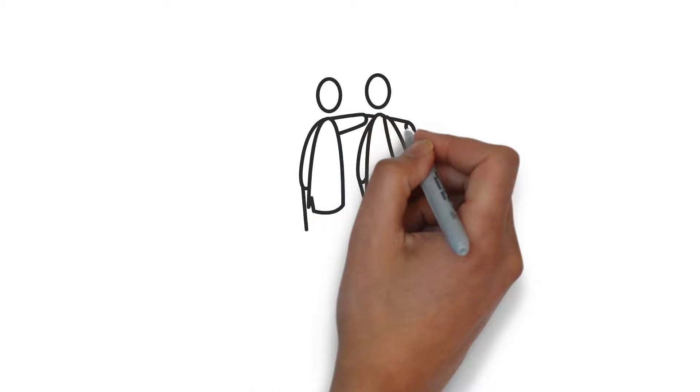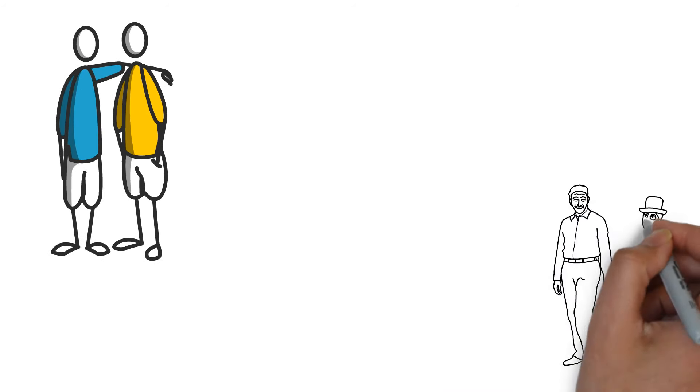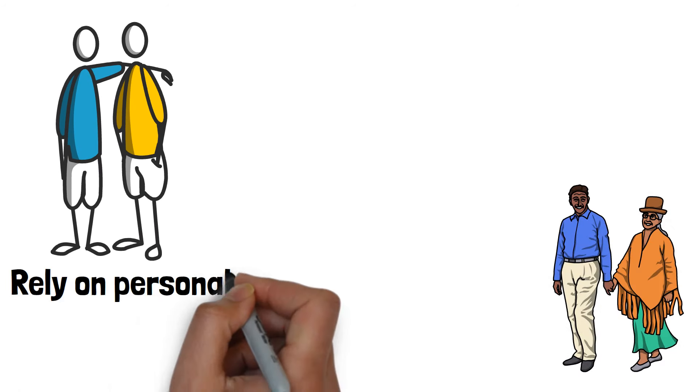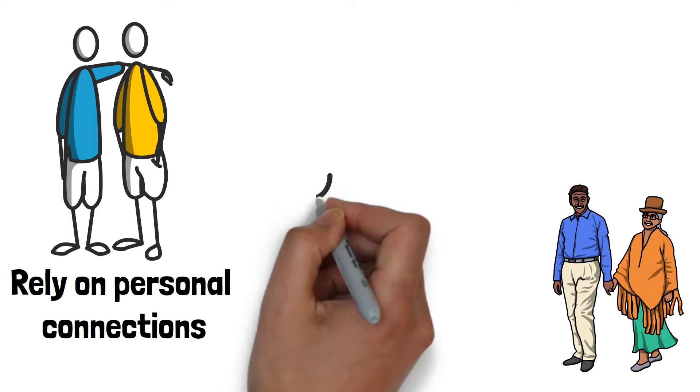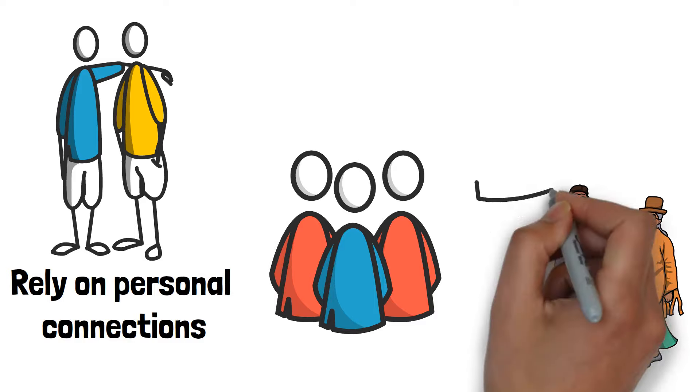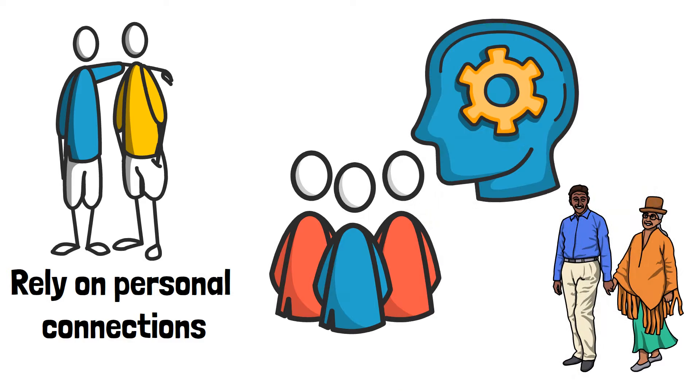In contrast, narrow spacing between words might indicate a preference for close relationships and dependency. If your words are closely packed together, it can reflect a desire to be close to others and a tendency to rely on personal connections. People with narrow spacing often seek companionship and feel more comfortable when they are surrounded by others. They may have a strong sense of community and prefer working closely with others.